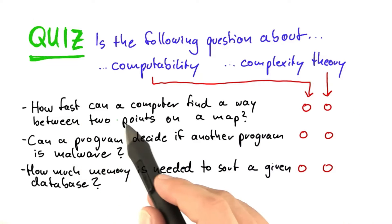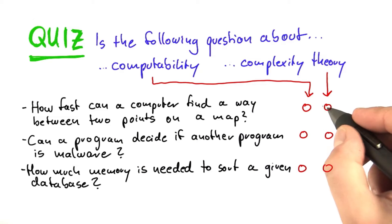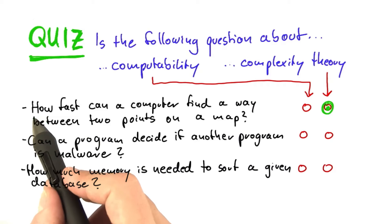The first question, how fast a computer can find a way between two points on a map, belongs into complexity theory, because here it's a question of resources.